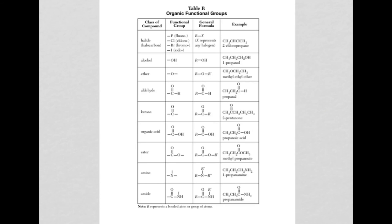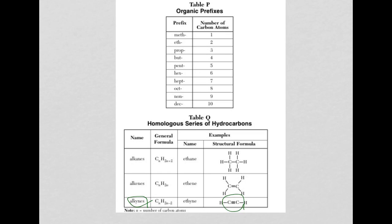But I'm calling it a skill because you could use reference table R, which gives you the functional groups as a guide. Here's my aldehydes and my A-L ending, my ketones and my O-N-E, and my ether with the name ether. And what's different is how the oxygen is arranged on the molecule.